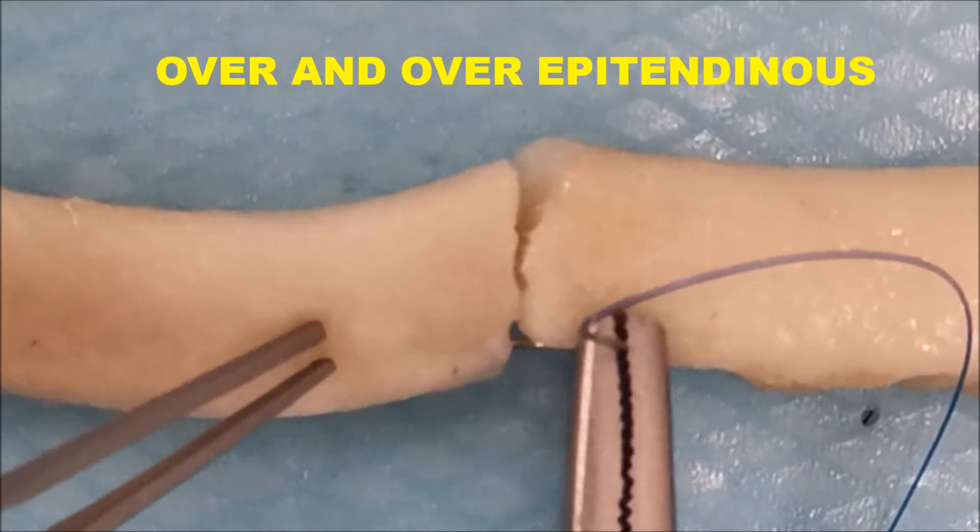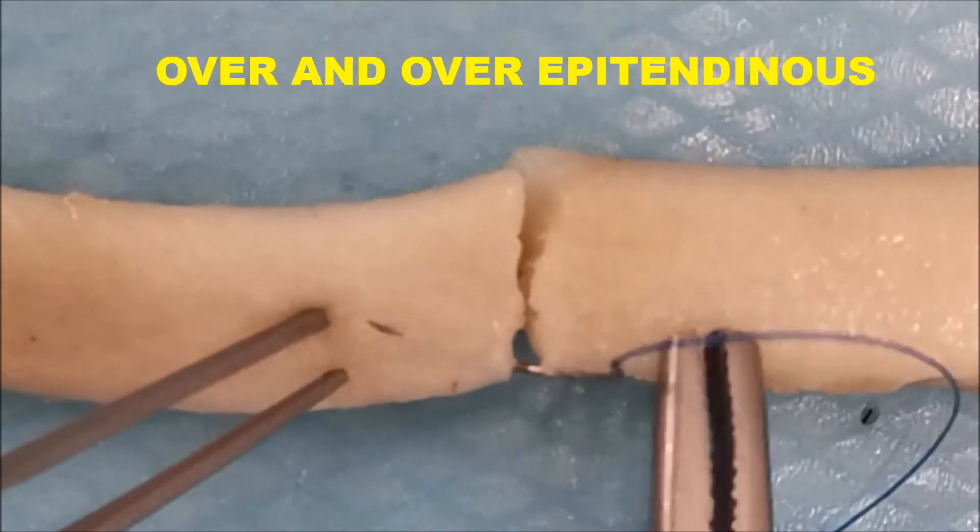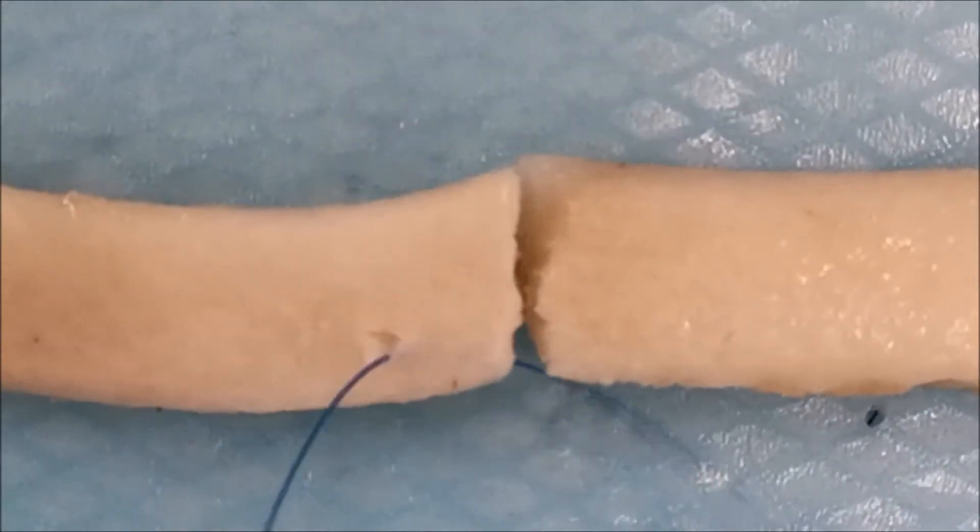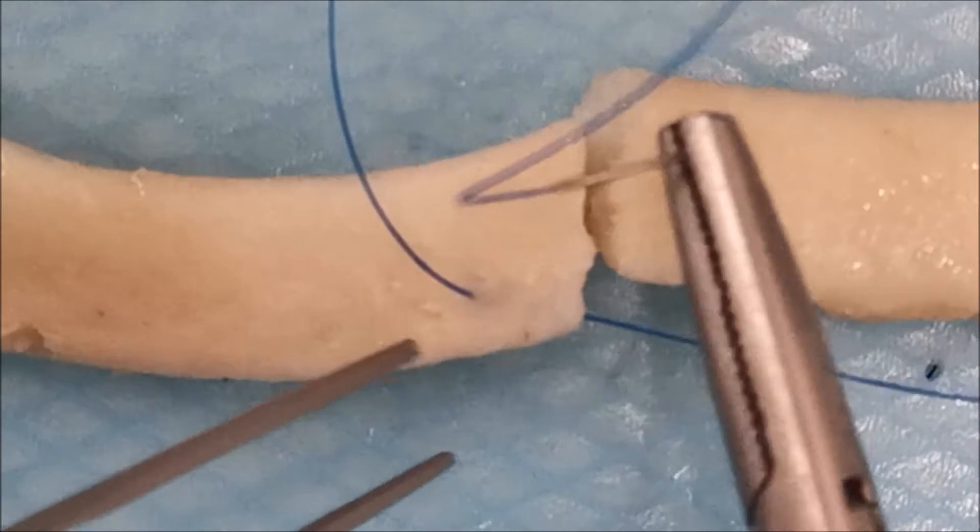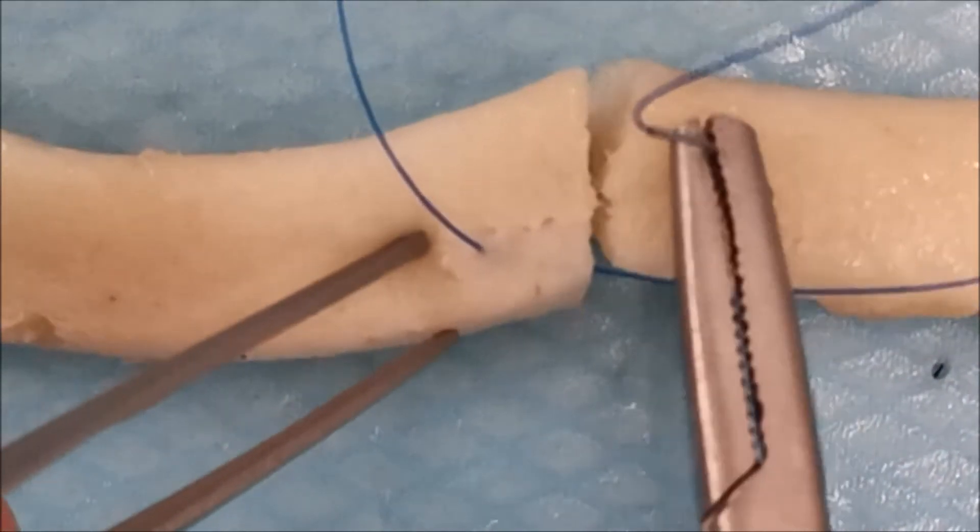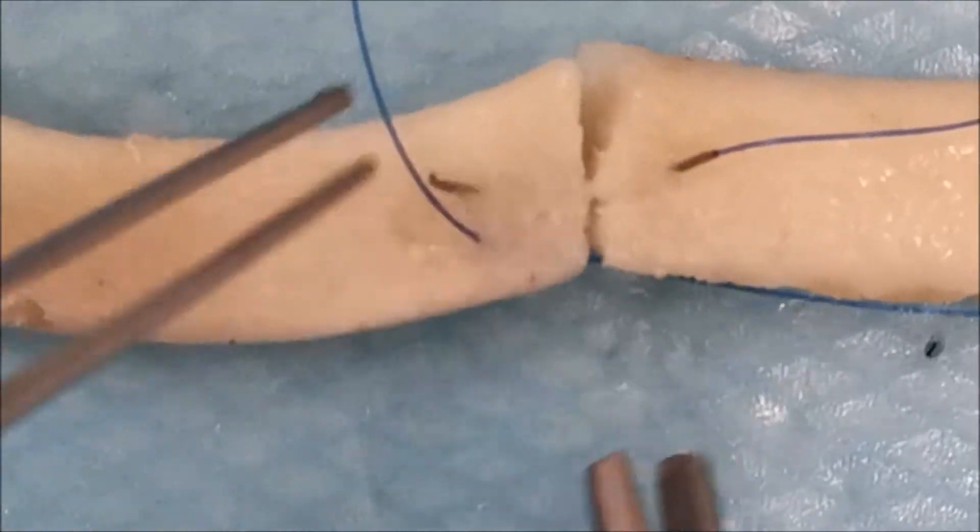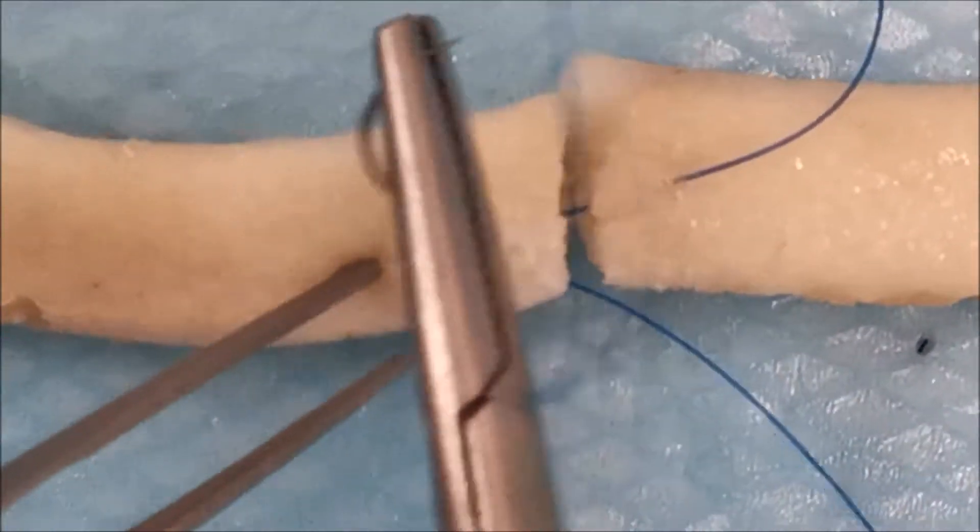The over and over epitendinous is just a simple running suture. You are just taking the epitendon and be careful not to go too deep as to injure or damage your core sutures.